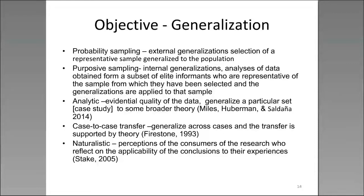In analytic generalization, you look at the evidential quality of the data and generalize a particular case study to some broader theory — for example, learning disabilities. Although individuals with learning disabilities share a label, they are very heterogeneous in their display of behaviors. Case-to-case transfer generalizes across cases supported by theory. Naturalistic generalization, from Stake 2005, occurs when the consumers of the research reflect on the applicability of findings to their own individual experiences. There are different types of generalization beyond just external generalization.